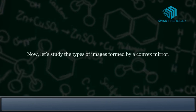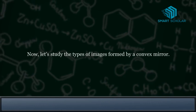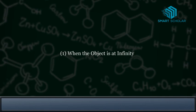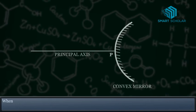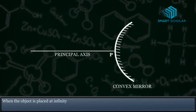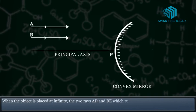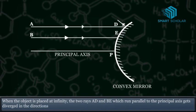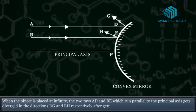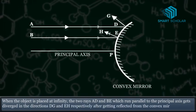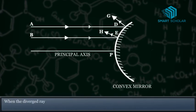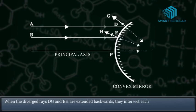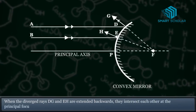Now, let's study the types of images formed by a convex mirror. When the object is placed at infinity, the two rays which run parallel to the principal axis get diverged respectively after getting reflected from the convex mirror. When the diverged rays are extended backwards, they intersect each other at the principal focus F.